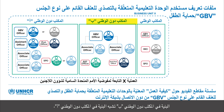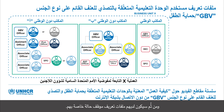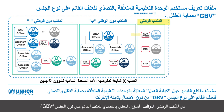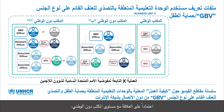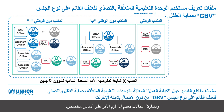Sub-national office B has a similar setup: the GBV officer would be the case manager, allowing them to create cases and provide supervision to the associate officers, who would have caseworker profiles doing most of the casework. In the national office, the GBV officer could be a case manager or caseworker depending on their engagement with direct service provision and the sub-national offices — allowing them to create their own cases and have cases shared on an ad hoc basis. This completes step one.